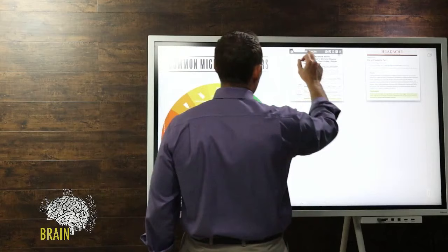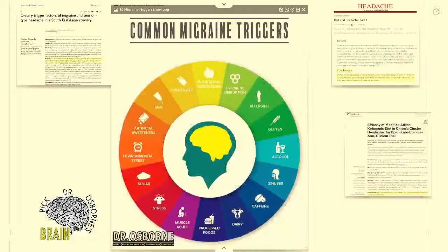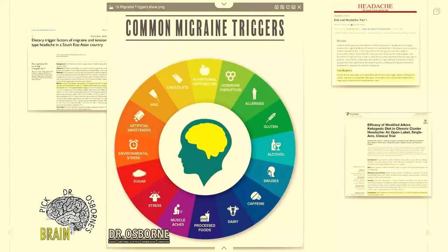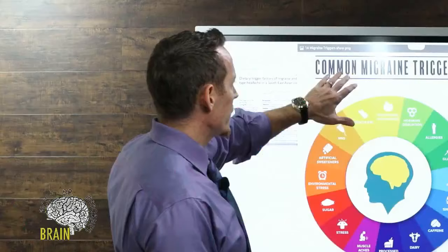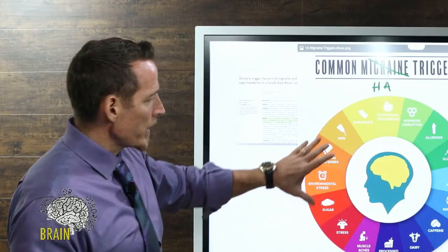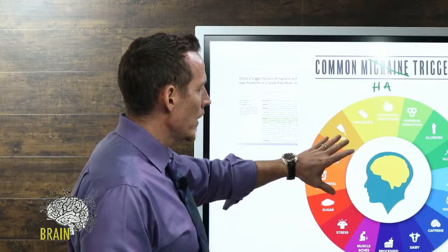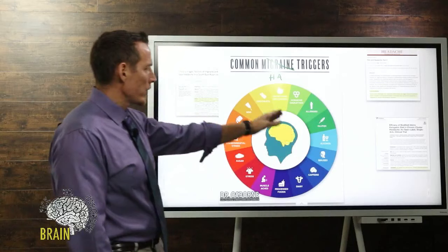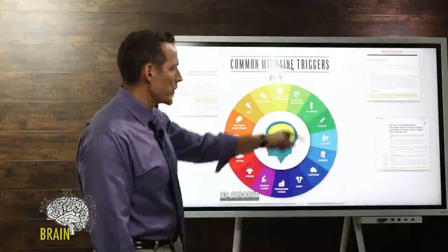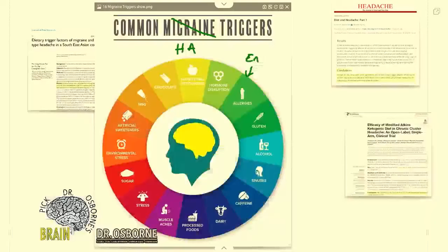Let's talk about some of these major triggers. I'm showing you a diagram of common migraine triggers — really it could say common headache triggers. This wheel illustrates the different things that can contribute to headache progression. Going around the list: we've got nutritional deficiencies, hormone problems, allergies — and this doesn't have to be just environmental allergies.